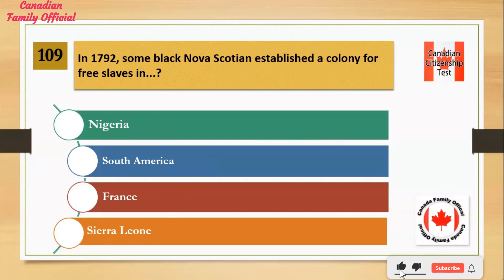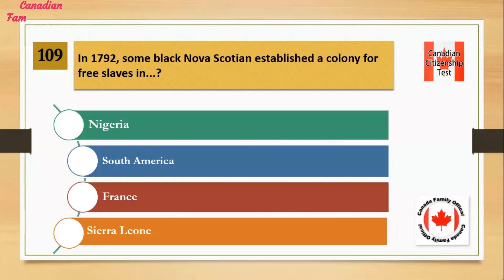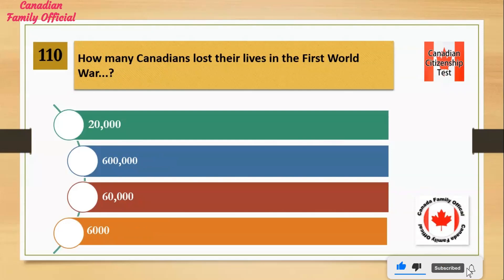In 1792, some black Nova Scotians established a colony for free slaves in: Number 1: Nigeria. Number 2: South America. Number 3: France. Number 4: Sierra Leone. And the answer is Sierra Leone.